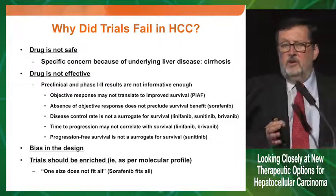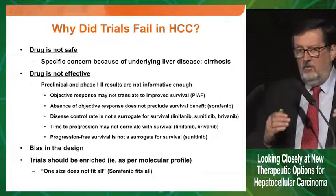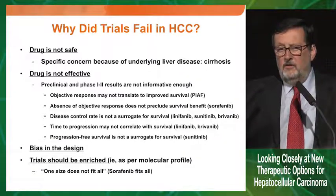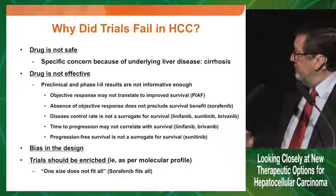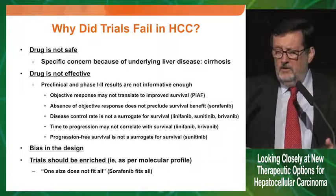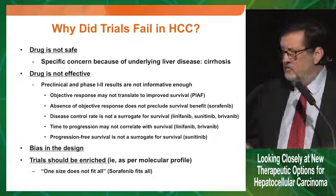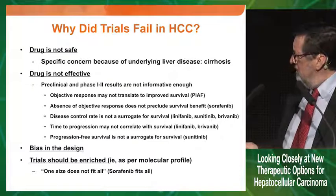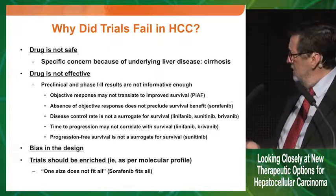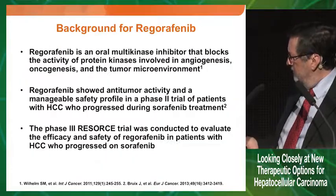We need to refine trial design. When we did SHARP, we used BCLC prognostic parameters to stratify. For RESORCE, we expanded the stratification factors because we now know more about the natural history of advanced HCC in the second-line setting. The saying of enriched trials based on molecular profile is wishful thinking — there is no proof that this will work. The trial run by Tivantinib is based on c-MET positivity, but we will have to wait. Sorafenib fits all, and Regorafenib — as I will show — fits all. This statement about molecular enrichment has been proven false twice.